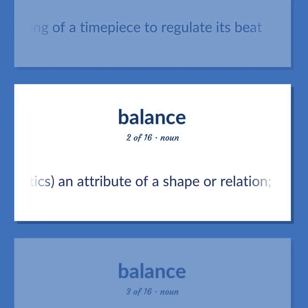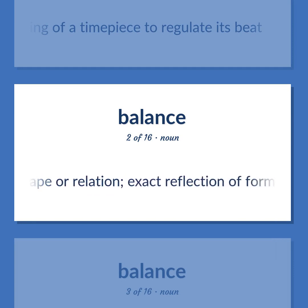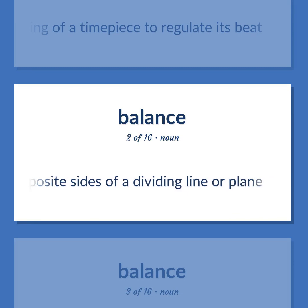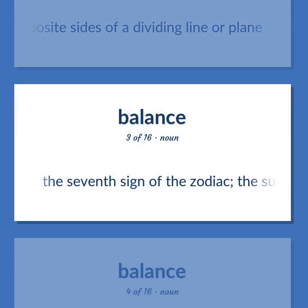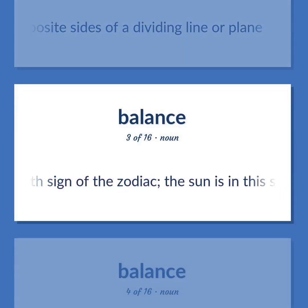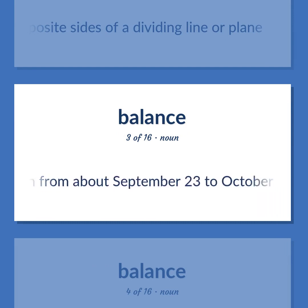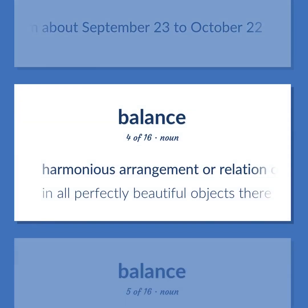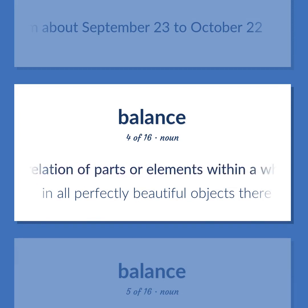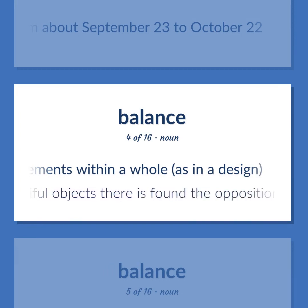Symmetry: a mathematics attribute of a shape or relation — exact reflection of form on opposite sides of a dividing line or plane. Libra: the seventh sign of the zodiac; the sun is in this sign from about September 23 to October 22. Balance: harmonious arrangement or relation of parts or elements within a whole, as in a design. In all perfectly beautiful objects there is found the opposition of one part to another in a reciprocal balance.